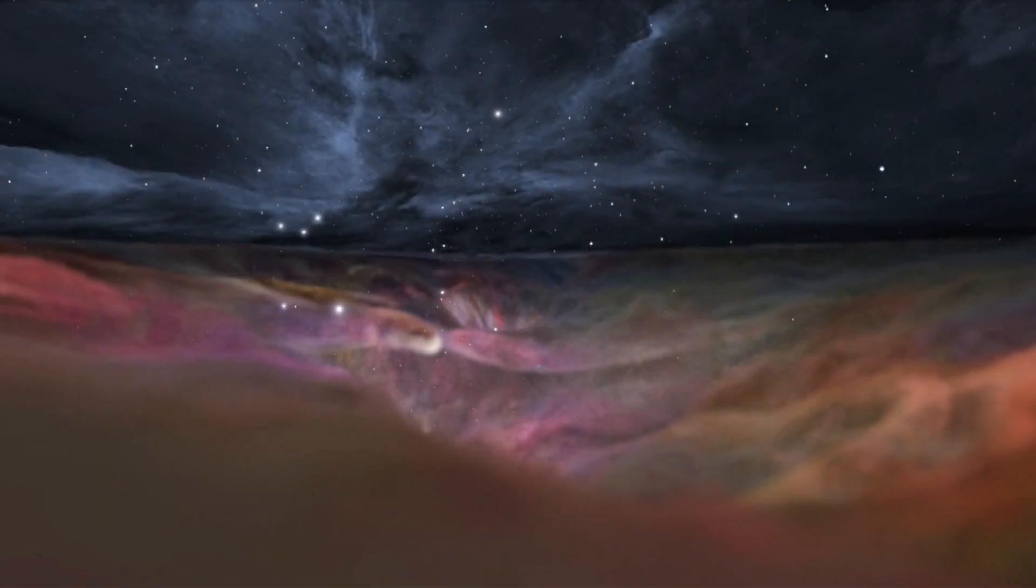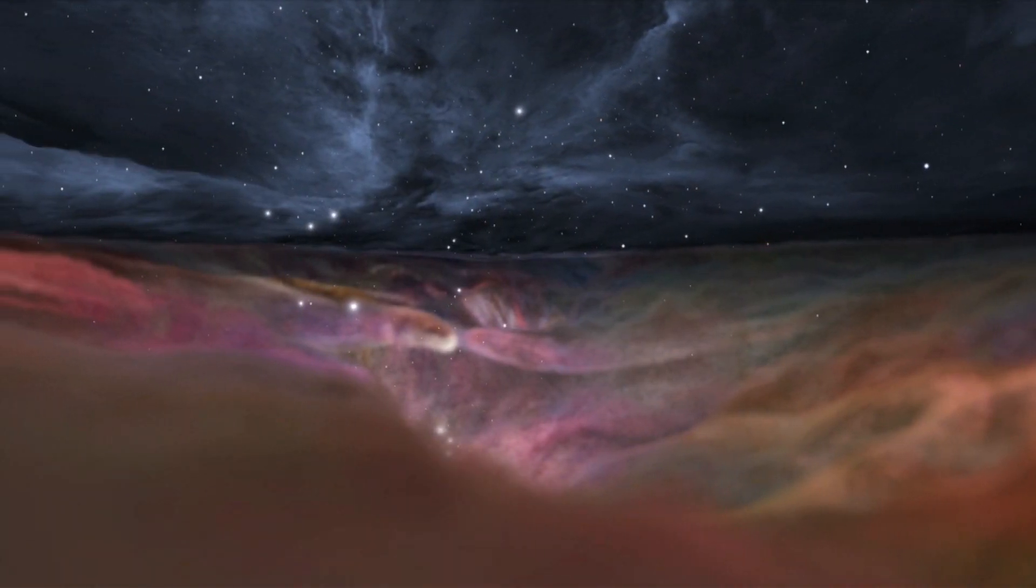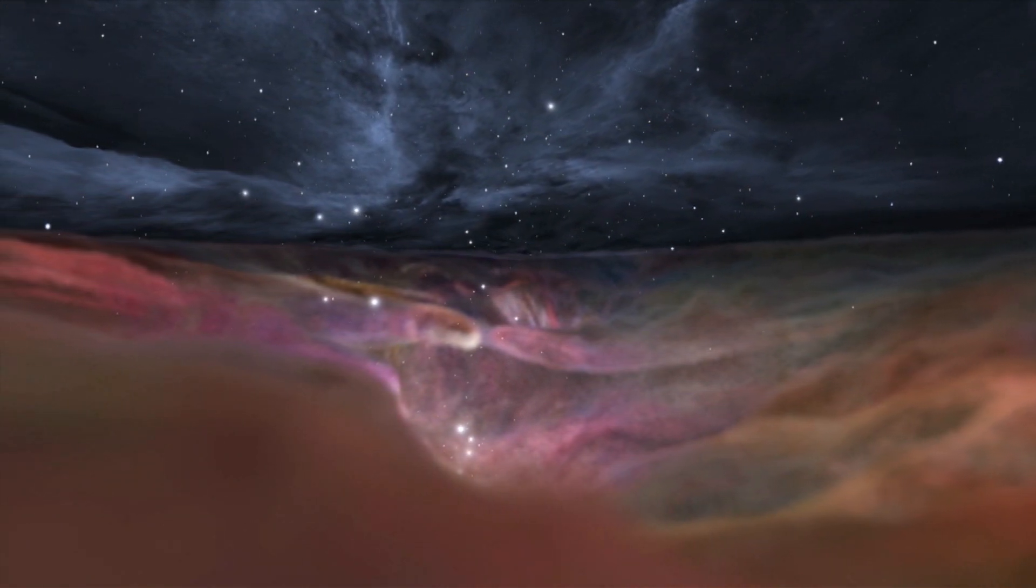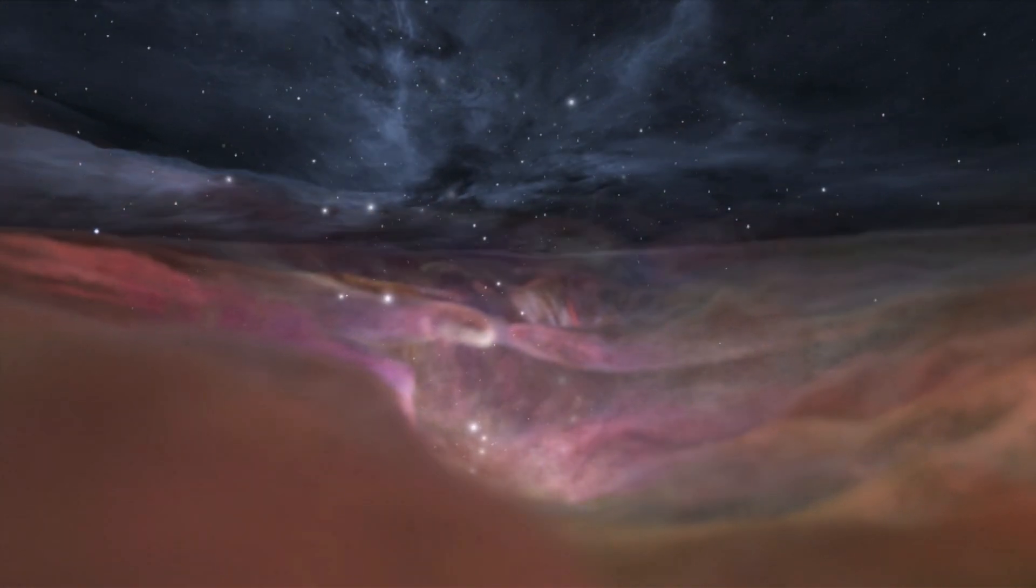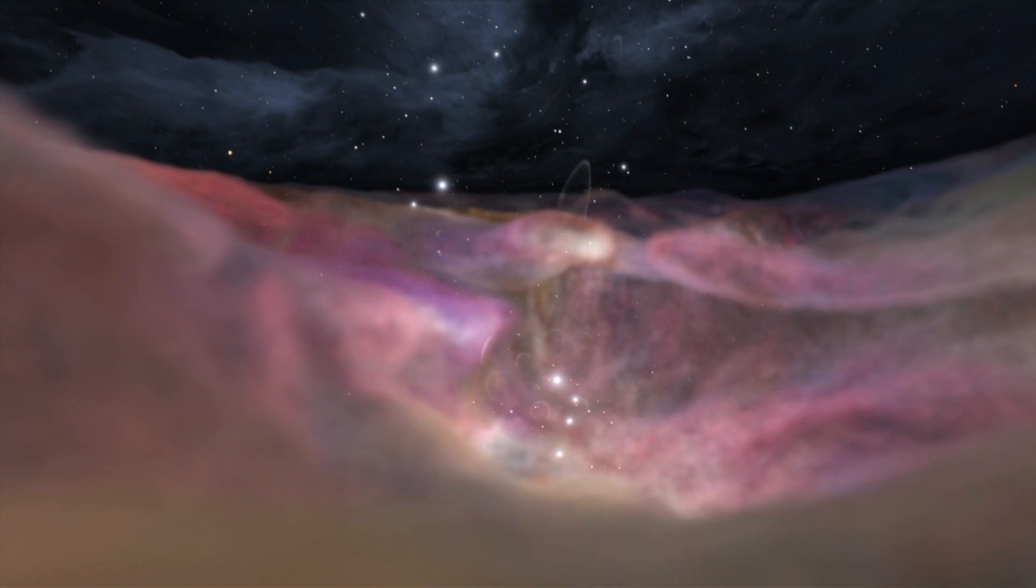The Orion Nebula is gigantic, spanning over 30 light years in diameter, and there is enough material there to produce over 10,000 stars the size of our sun that will go on to live for billions of years and maybe even spawn their own planets that will look back at us while we keep looking up.